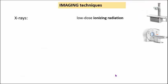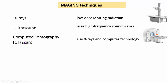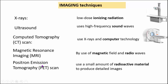Now let's look at imaging techniques. Examples include X-rays, which use low-dose ionizing radiation; ultrasound examination, which uses high-frequency sound waves; computed tomography (CT scan), which uses X-rays and computer technology; MRI or magnetic resonance imaging, which uses magnetic fields and radio waves; and positron emission tomography (PET scan), which uses a small amount of radioactive material to produce detailed images. These can be used alone or in combination in the diagnosis of cancers.